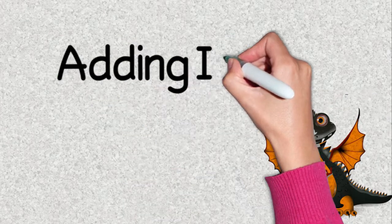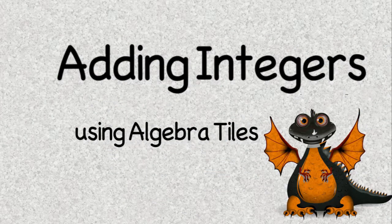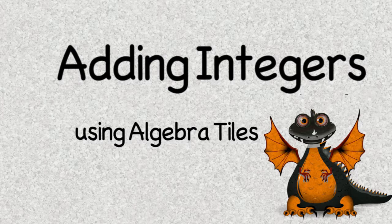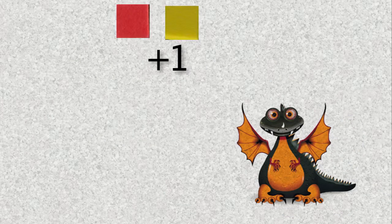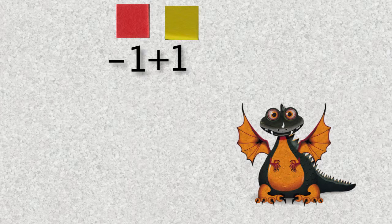Today we're going to look at adding integers using algebra tiles. The first thing we need to do is look at our algebra tiles. The yellow tile represents positive 1, and the red tile represents negative 1.